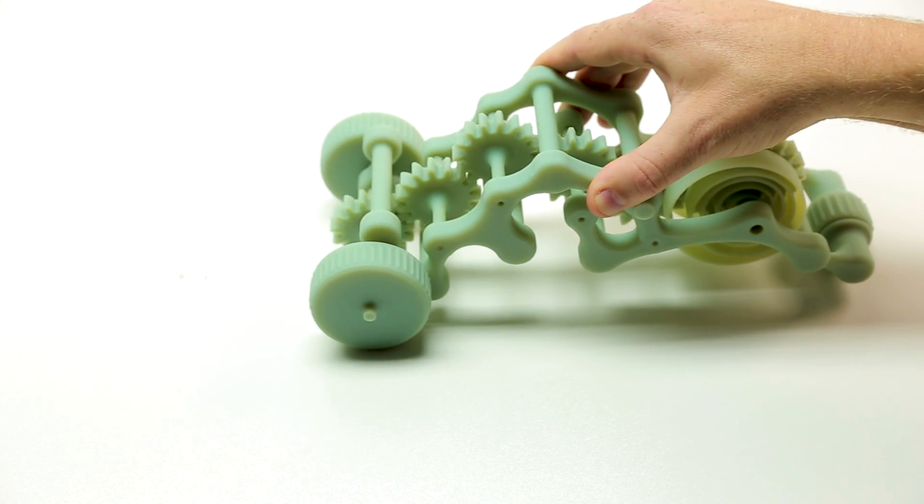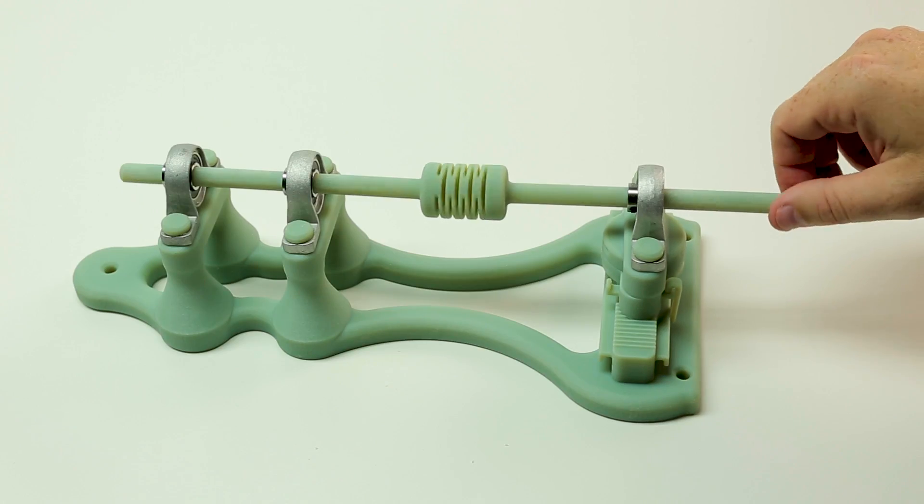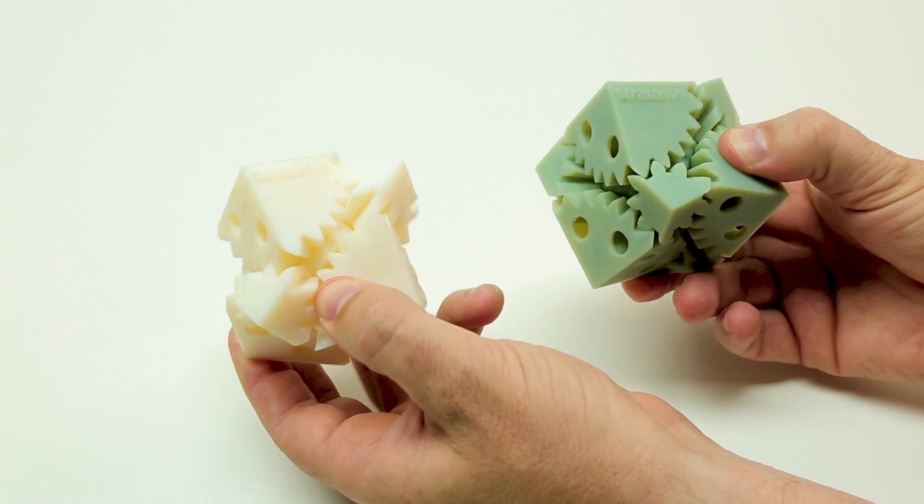Introducing Digital ABS+, a new PolyJet digital material. The material comes in two color versions, green and ivory.